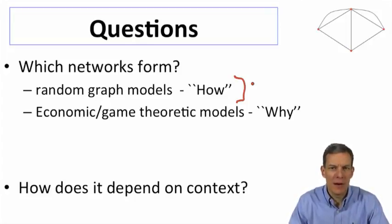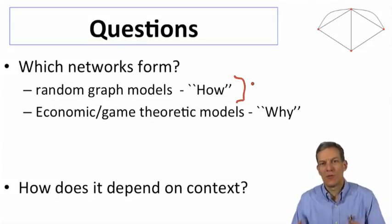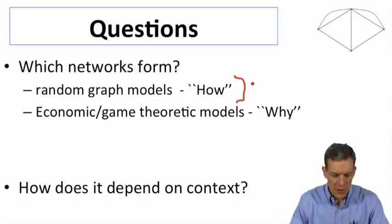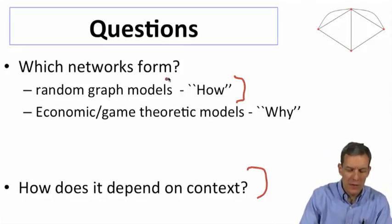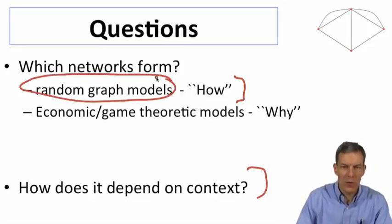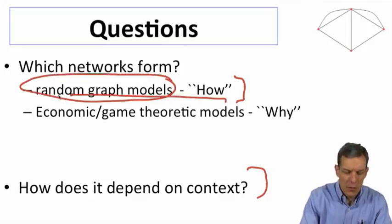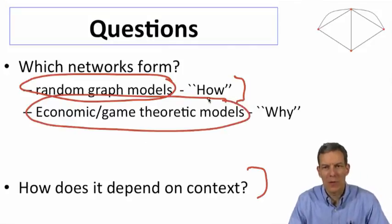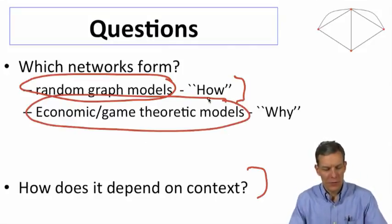The economic or game theoretic kind of strategic models will answer why. They might tell us why would we see a tree structure, not the fact that a tree structure does give you this property, but why would we end up having these kinds of shorter paths. And more generally, we're going to want to keep track of how these things depend on context. So what we're going to do is we're going to take these things in turn. We'll start with looking at random graph models in more detail. Then we'll come back to some economic and game theoretic models. And we'll also talk about some hybrid models.